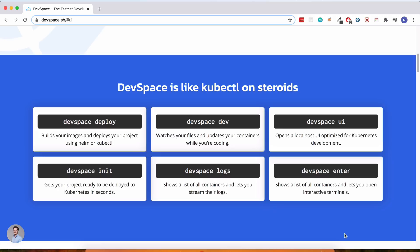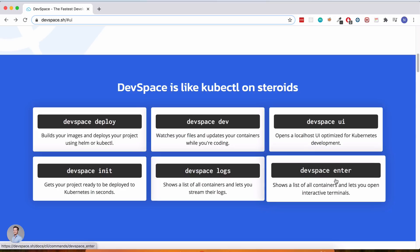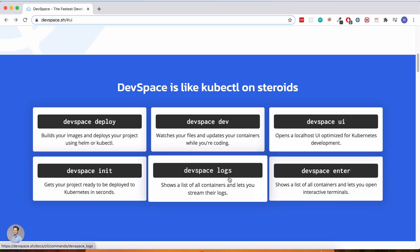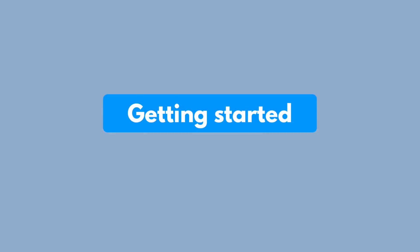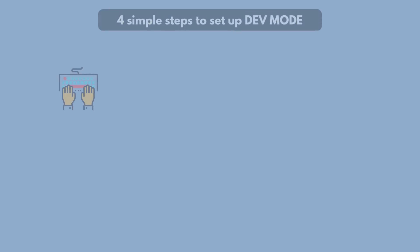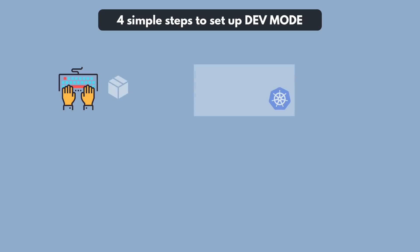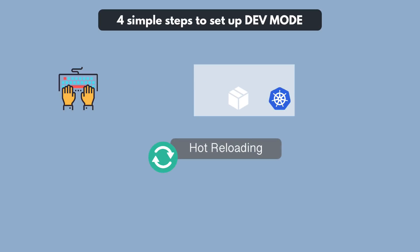What's also great about Dev Space is that it gives you shortcut commands to get the container terminal or logs without needing to check the pod ID and namespace. So let's jump into a demo to show you how to set up the development mode with hot reloading in four simple steps, and also show you how this can make the development process much more efficient when working with Kubernetes.